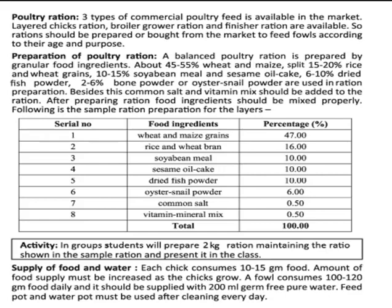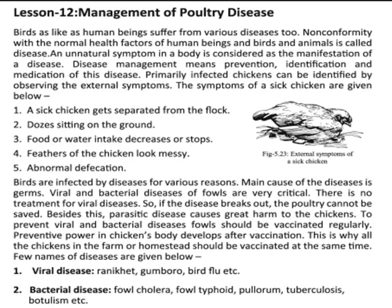The supply of food and water: a chick consumes 10 to 50 grams of food; the amount of food supply must be increased as the chick grows, and a full-grown fowl consumes 10 to 120 grams of food daily. It should be supplied with 200 ml germ-free water. Feed, food, and water must be used after cleaning every day. At the advancing of the age, we will have to give them more feed, and also give 200 ml germ-free water for every chick.